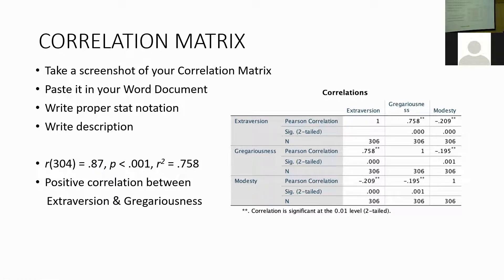Do you want me to slow down or repeat anything, or are we good? If your p-value is 0.000, you would report it as p less than 0.001. That's exactly what you do for the significance.